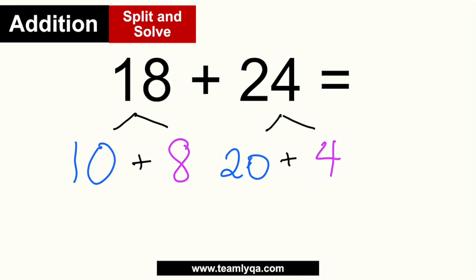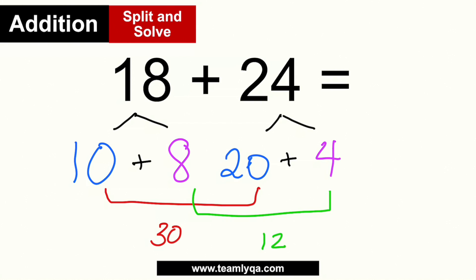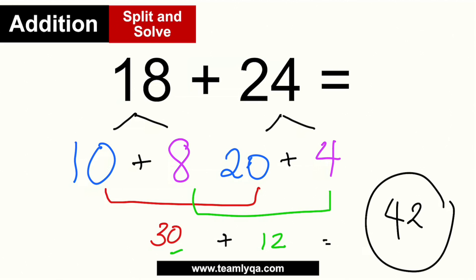Now that I've split both addends into tens and ones, I put the tens together and the ones together. Mentally: 10 and 20 is 30, and 8 and 4 is 12. Since it's always easier to add anything to a number ending in zero, this is simpler than dealing with carried-over digits. So 30 plus 12 is simply 42 — the same answer using a different method.